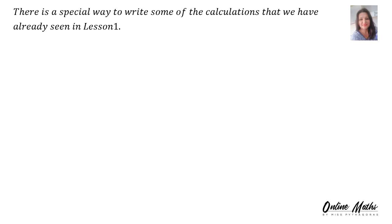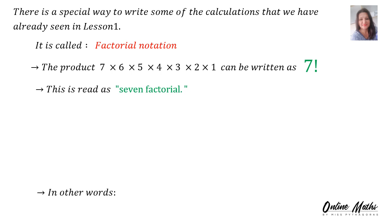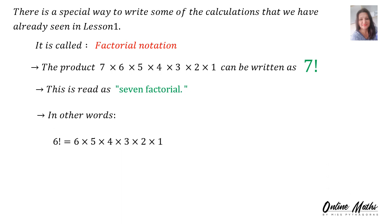There is a special way to write some of the calculations that we have already seen in lesson 1. It is called factorial notation. The product 7 times 6 times 5 times 4 times 3 times 2 times 1 can be written as 7 factorial, or 7 with an exclamation mark. This is read as 7 factorial. In other words, 6 factorial is equal to 6 times 5 times 4 times 3 times 2 times 1, and the answer is 720.